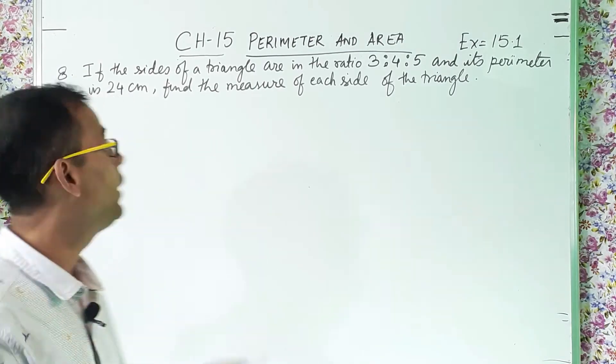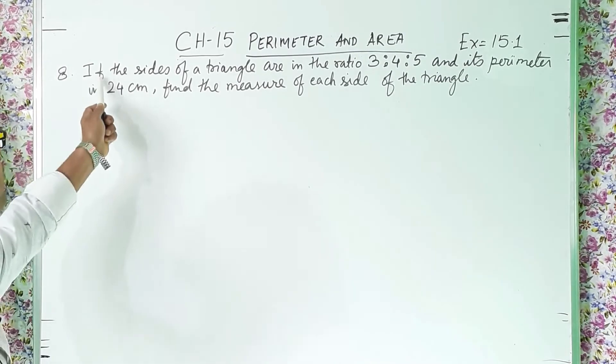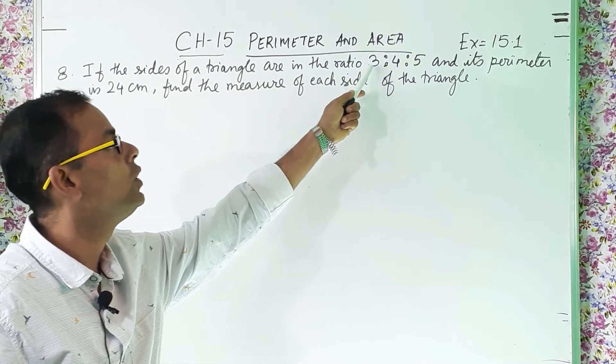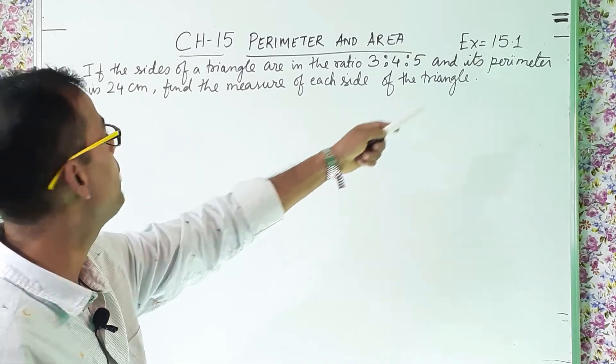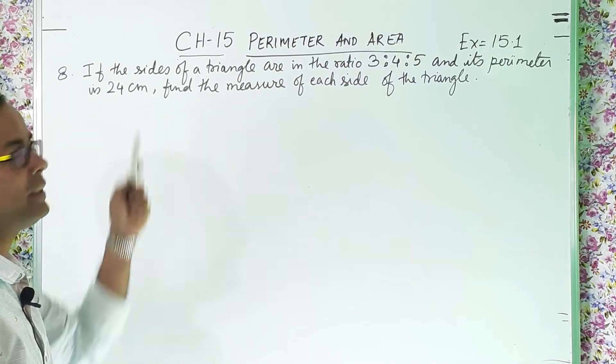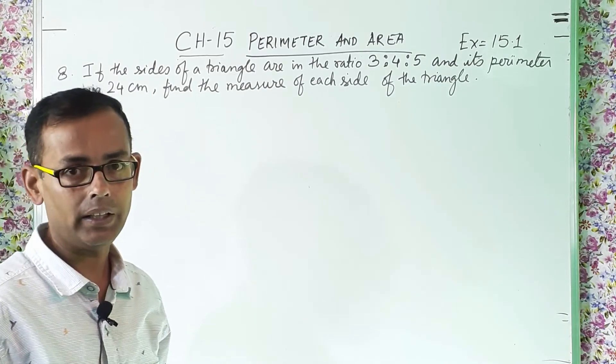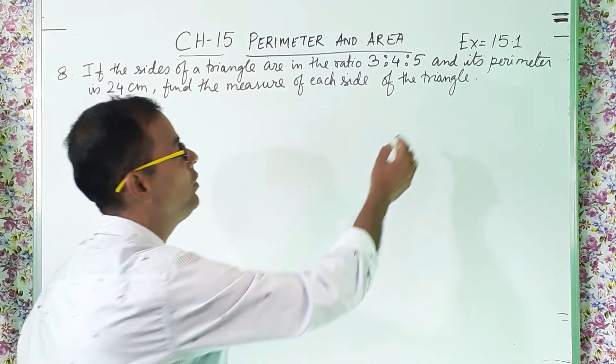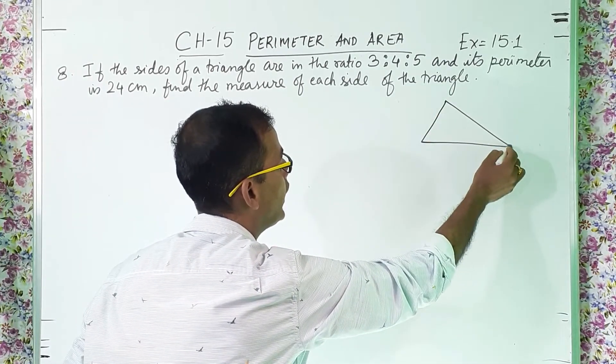Now let us come back to the next sum that is question number 8. If the sides of a triangle are in the ratio 3 is to 4 is to 5 and its perimeter is 24 centimeter, find the measure of each side of the triangle. So they are talking about a triangle. So first of all, we will draw one triangle. So like this way, one triangle we will draw.